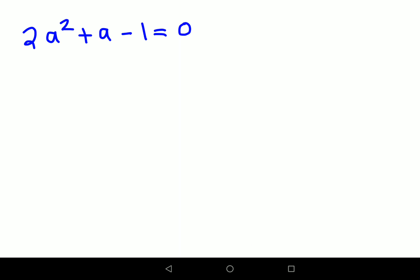Now understand, in order to solve any quadratic, this coefficient of a squared term should be 1. But in this case since it is not 1, what we will do is multiply 2 to the constant. So 2 times minus 1 gets you minus 2. So you will try to find the factors for minus 2 in such a way that you get a plus 1.